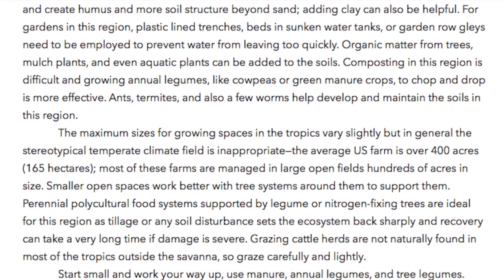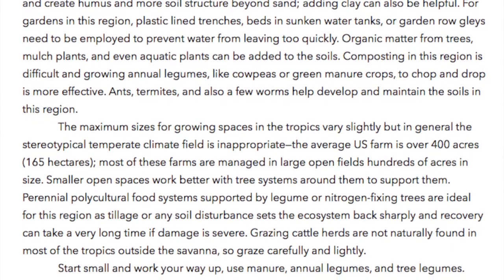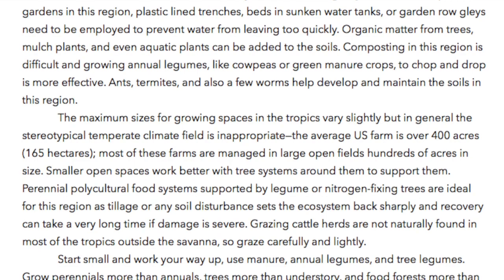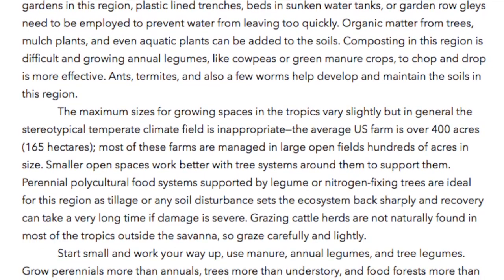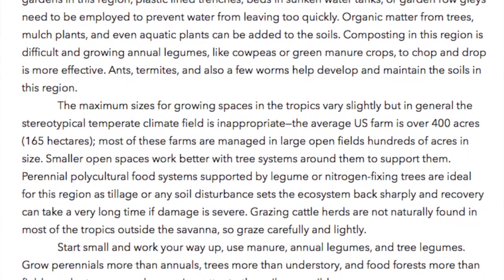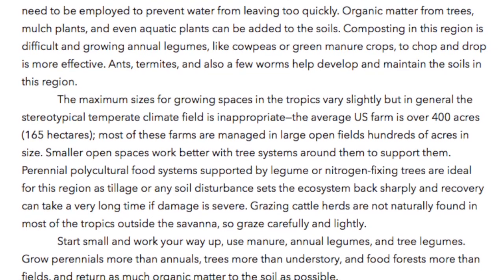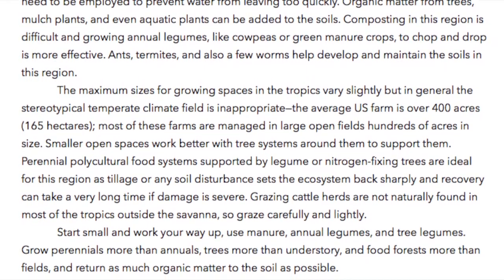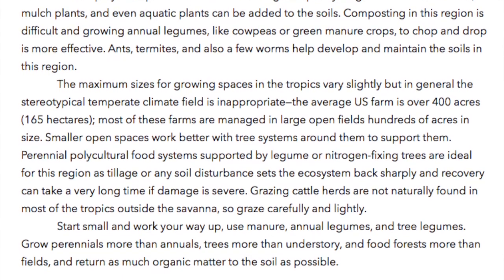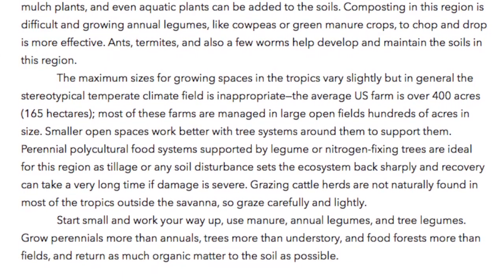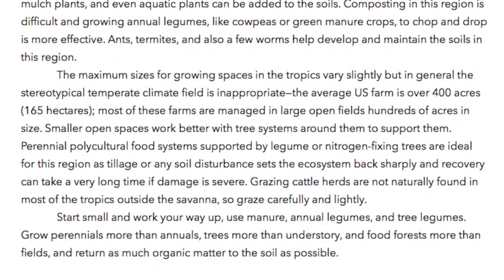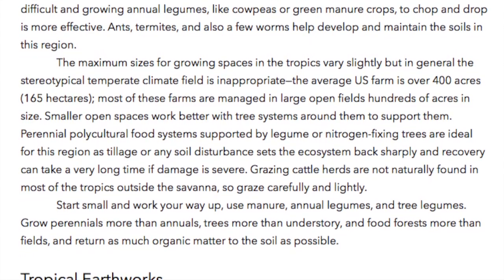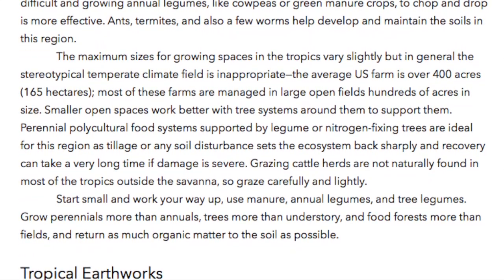Ants, termites, and also a few worms help develop and maintain the soils in this region. The maximum sizes for growing spaces in the tropics vary slightly, but in general the stereotypical temperate climate field is inappropriate. The average U.S. farm is over 400 acres — that's 165 hectares — and most of these farms are managed in large open fields, hundreds of acres in size.